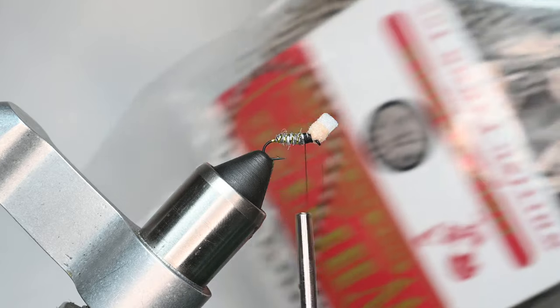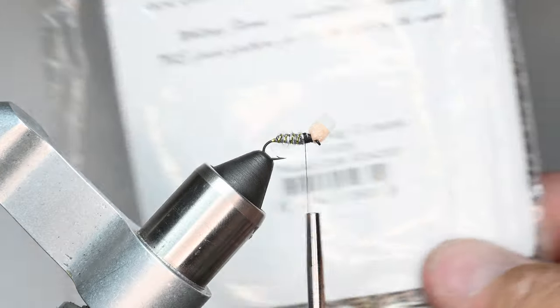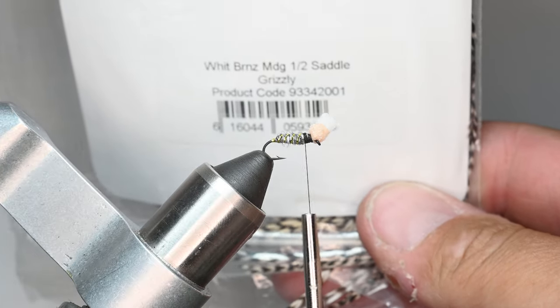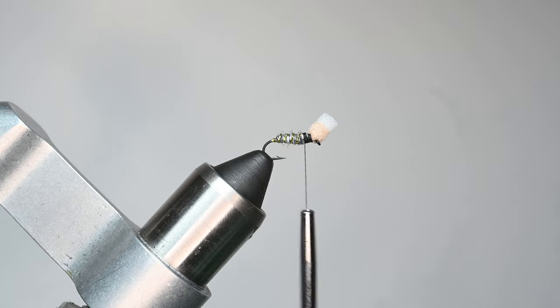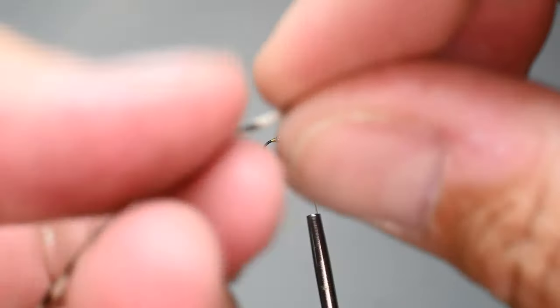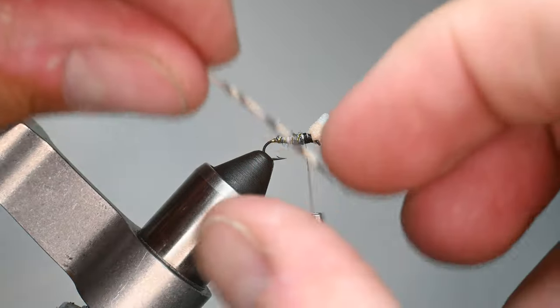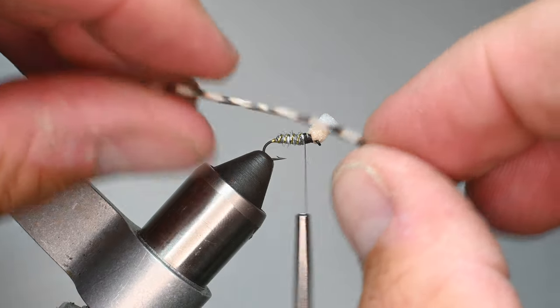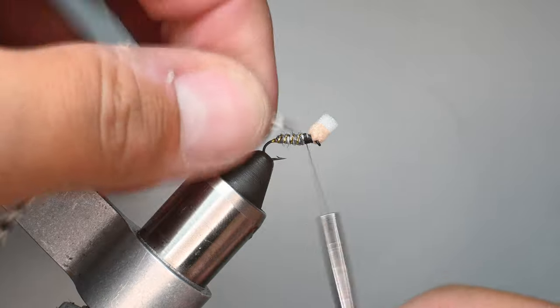The next step is we're going to use some Whiting Farms. This is a midge saddle, or a half saddle, and it's in grizzly. I love grizzly, and this is a really good piece of hackle. I've already been tying some up and I'm just going to take it and prep the end here—just peel off a little bit of the fibers exposing about an eighth of an inch.